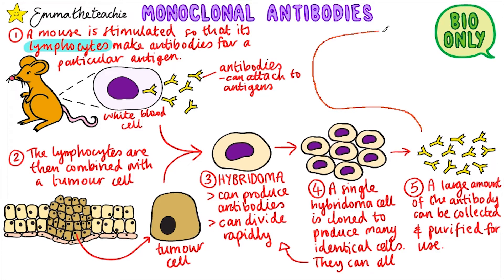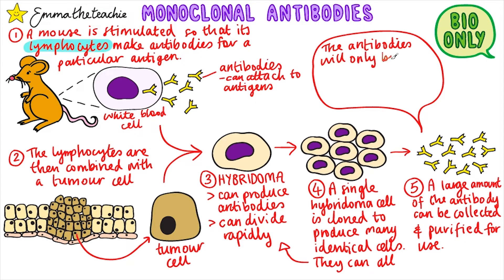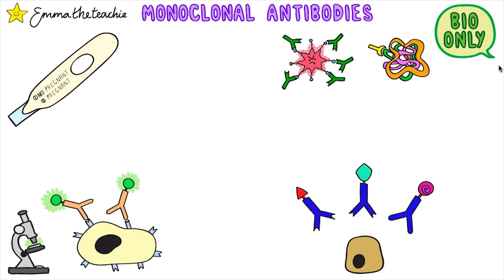The uses of monoclonal antibodies are all possible because the antibodies will only bind to one specific type of antigen, which allows them to target specific cells in the body or chemicals like hormones. You need to be able to describe some of the uses and explain how they work — there are four to learn.